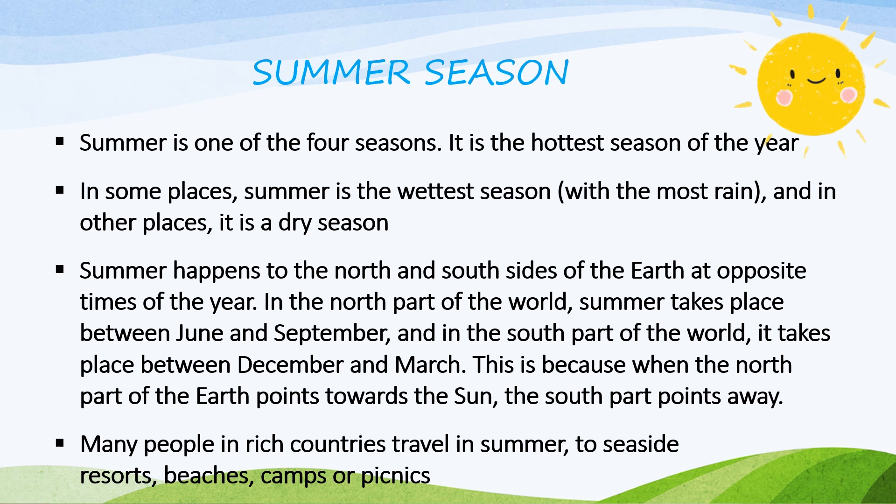In the north part of the world, summer takes place between June and September, and in the south part of the world, it takes place between December and March. This is because when the north part of the earth points towards the sun, the south part points away.